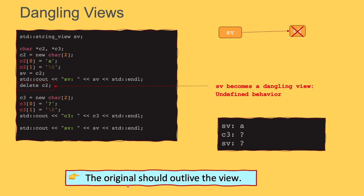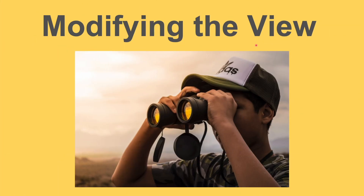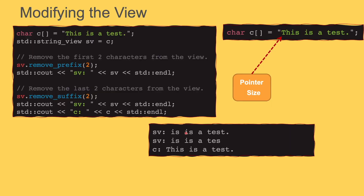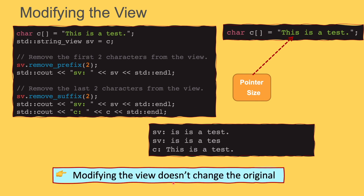In general, you have to make sure the original should outlive the view. A string view is really a view to the original, but you also need to know that a view can change. If you create a view to a C-style string, string_view provides two methods: remove_prefix and remove_suffix. The first removes the first characters from the view, and the second removes the last characters from the view. When I print the view after removing two characters from the beginning, I get the modified result, and the same after removing from the end. However, when I print the original, the original still stays the same. This can simply be implemented by modifying the pointer and the size — when removing the prefix, all that's needed is to increment the pointer. So modifying the view does not change the original.